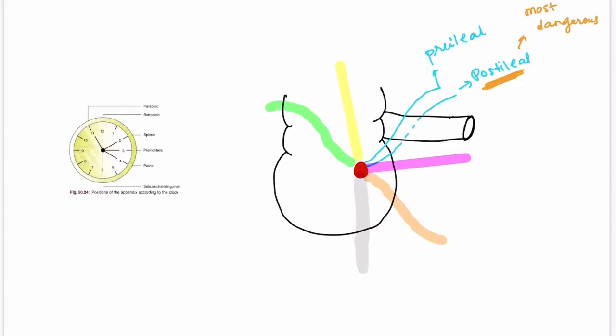Let's revise the positions once again. The first is the paracolic position where the appendix moves upwards and then turns towards the right — also called the 11 o'clock position. The second is retrocolic, where the appendix moves upwards right behind the cecum or the colon. It is also called the retrocolic or retro-cecal position, or the 12 o'clock position.